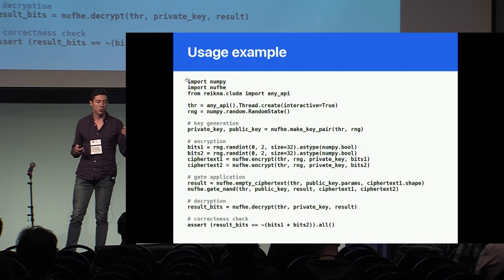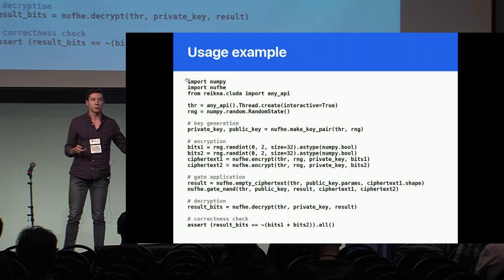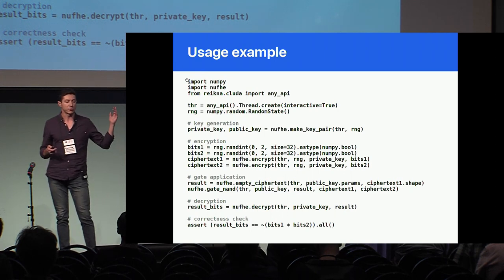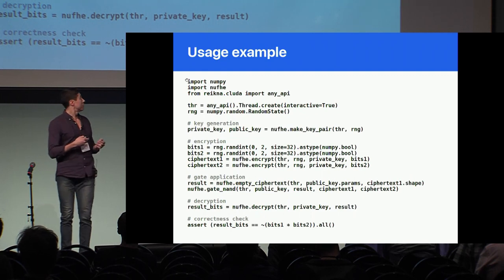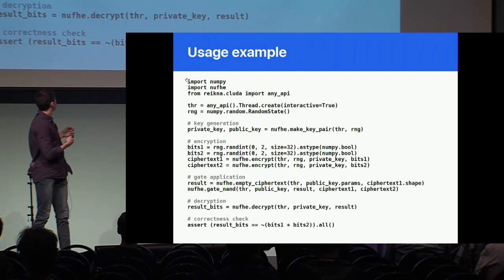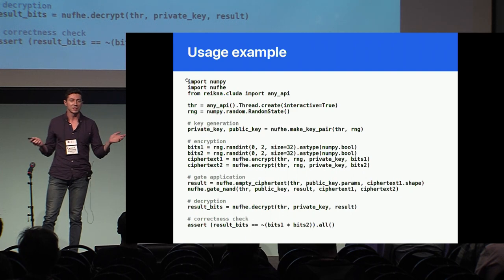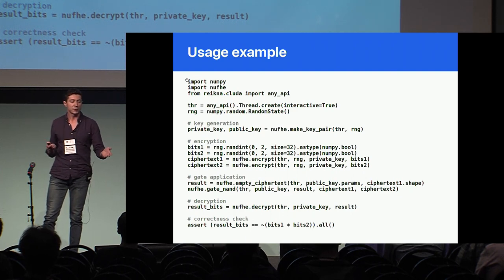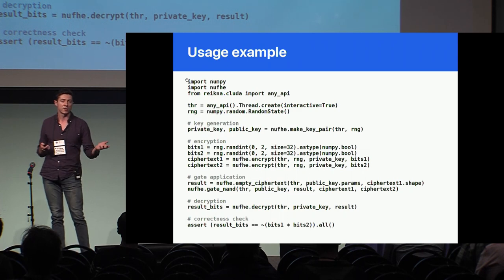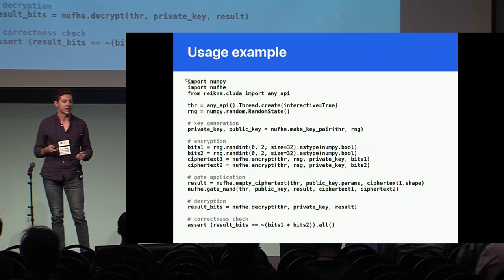Here is what an example looks like — you can find it in the repository. You create a key, you encrypt some bits, you run a gate on them, you decrypt them with a private key, and you can check that you got what you expected. In this case it's an AND gate run on a sequence of bits.